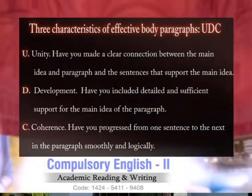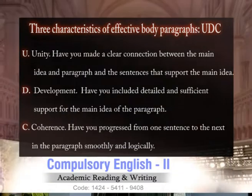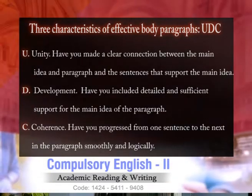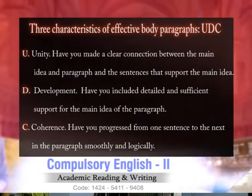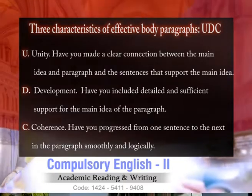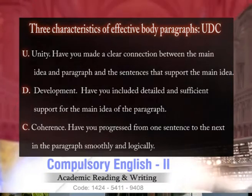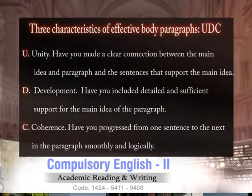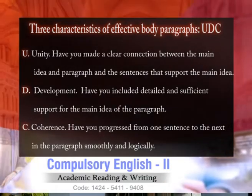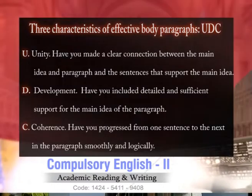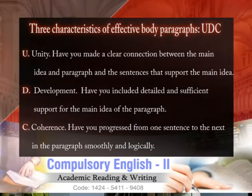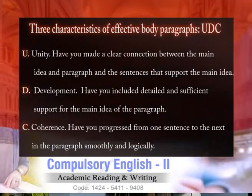There is a procedure for how to create body paragraphs. Effective body paragraphs have three characteristics called U, D, C. By U we mean unity — have you made a clear connection between the main idea of the paragraph and the sentences that support it? Then comes development — have you included detailed and sufficient support for the main idea? And then comes coherence — have you progressed from one sentence to the next smoothly and logically?